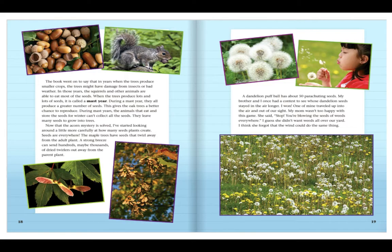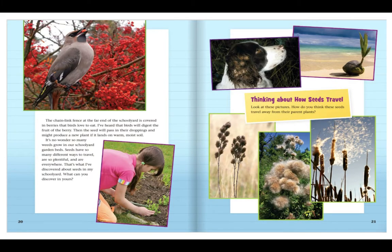I think she forgot that wind could do the same thing. The chain link fence at the far end of our schoolyard is covered in berries that birds love to eat. I've heard that birds will digest the fruit of the berry. Then, the seed will just pass in their droppings and might produce a new plant if it lands on warm, moist soil. It's no wonder so many weeds grow out in our schoolyard garden beds.